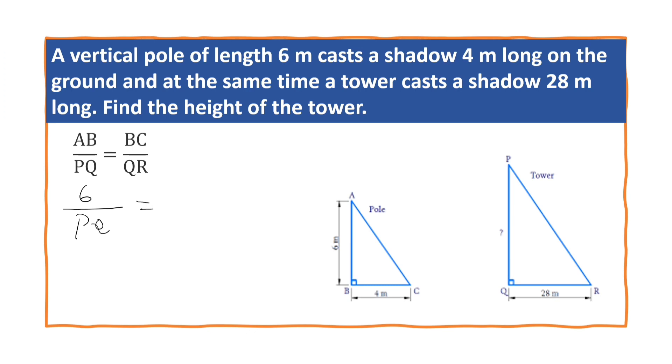BC is 4m. This is length of the shadow cast by the pole. Length of the shadow cast by the tower is 28. QR is 28.